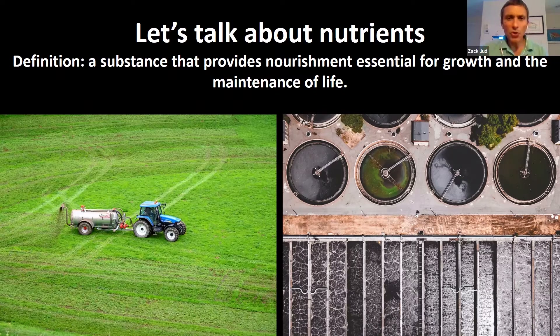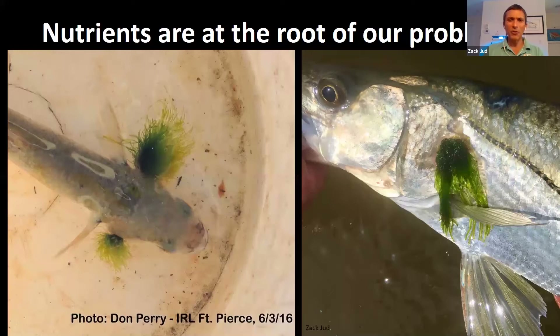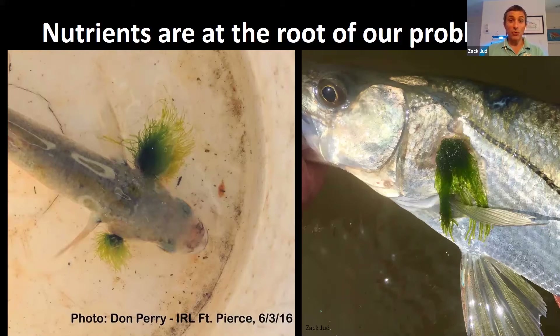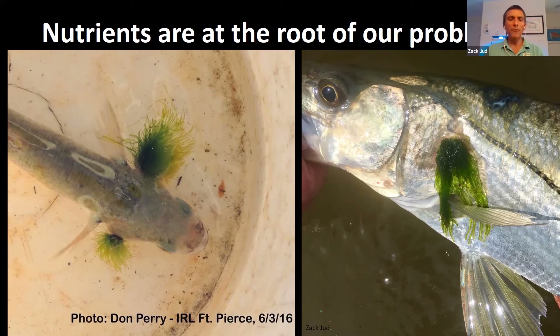How bad is our nutrient issue? These pictures are shocking evidence of just how many nutrients are in our local waterways. The picture on the left shows a mullet given to me by a concerned citizen — it has filamentous green algae growing on its gill covers. I figured it was a fluke, but a few years later I caught a snook that had the exact same thing: a huge clump of green algae literally growing attached to its gill covers. This is a pretty shocking sign that our waters are supercharged with nutrients in ways that never occurred historically.